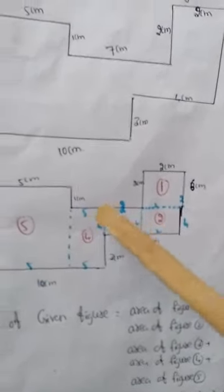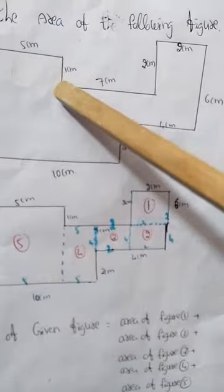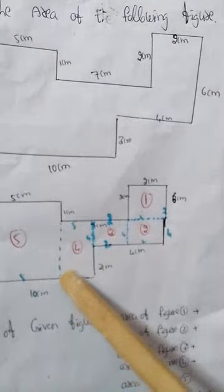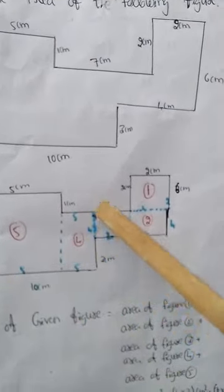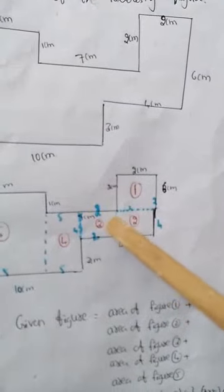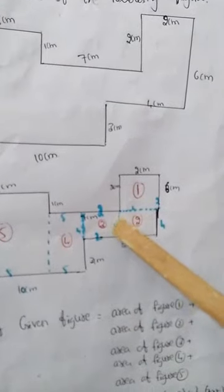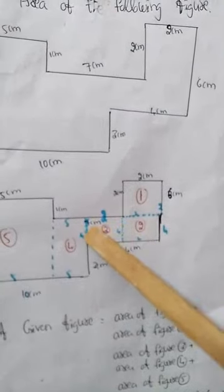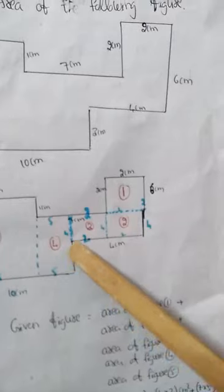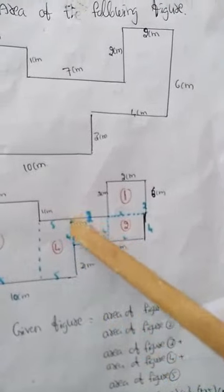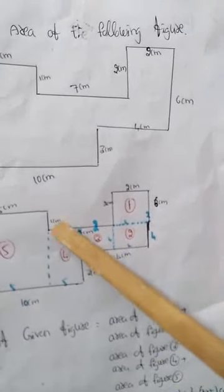Coming to Figure 4: draw one more line vertically here, then we will get Figure 4. Up to here three centimeters. In Figure 3 one side is four centimeters — it is a rectangle — and its opposite side is also four centimeters. So here it will be four, and three plus four gives a total of seven centimeters as one measure of Figure 4.